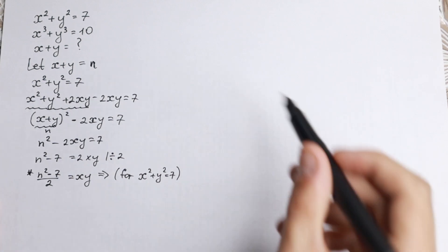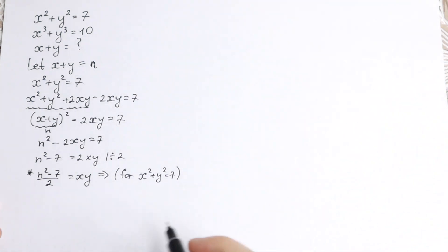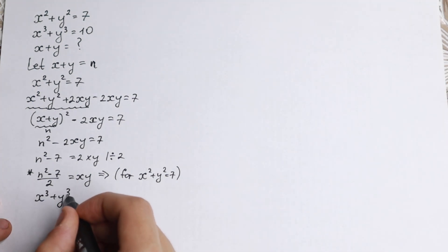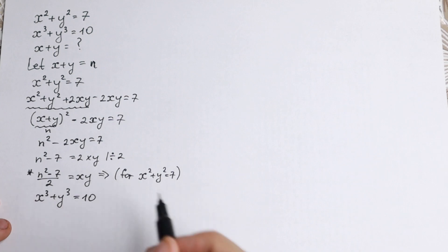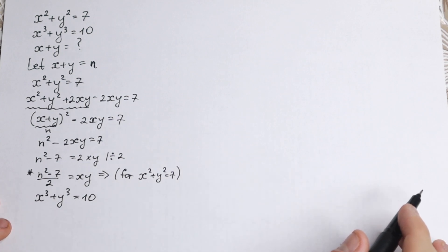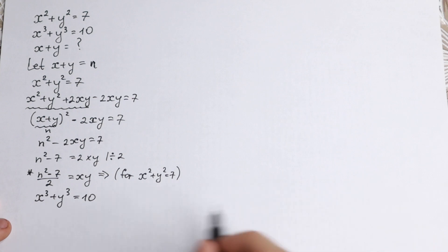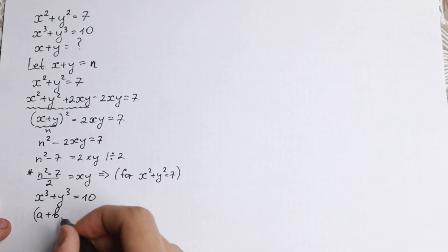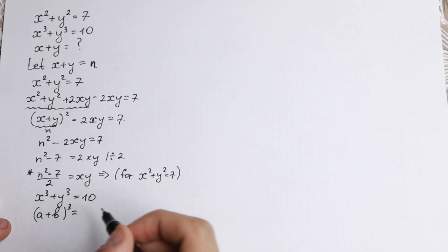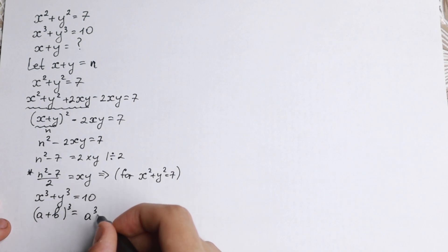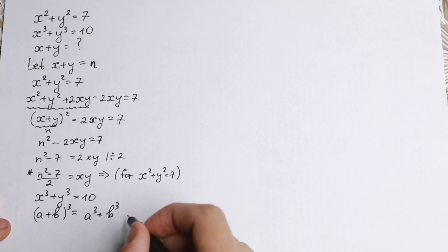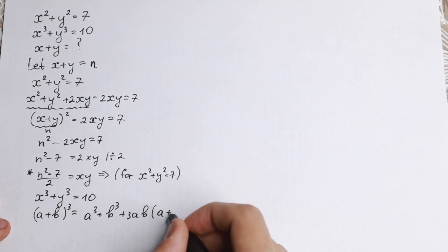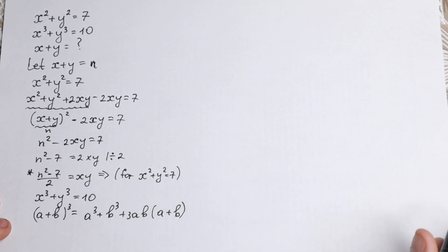Now let's work on the second equation: x cubed plus y cubed equals 10. I want to use the sum of cubes formula — (a+b) cubed equals a cubed plus b cubed plus 3ab times (a+b).